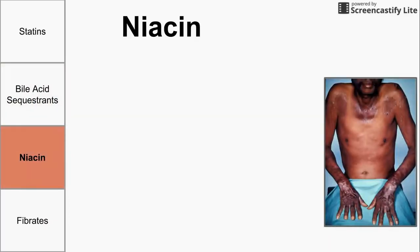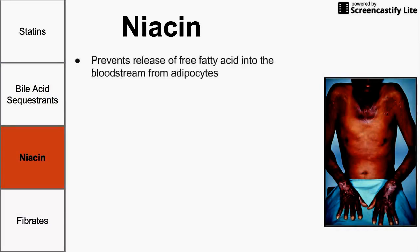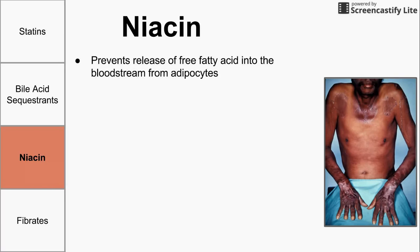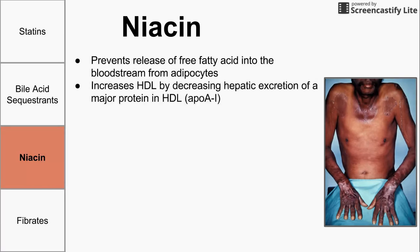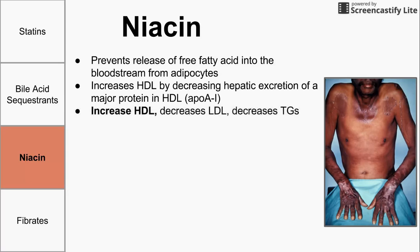The next class of drugs worth knowing is niacin. Niacin prevents the release of free fatty acids into the bloodstream from adipocytes — that's its mechanism of action. It increases HDL in the body by decreasing the hepatic secretion of a major protein component of HDL. So if the liver is no longer secreting a protein used to make up HDL, it's going to increase HDL in the body. Its major effects are to increase HDL, decrease LDL, and decrease triglycerides, but it is mainly used to increase HDL, the good cholesterol.